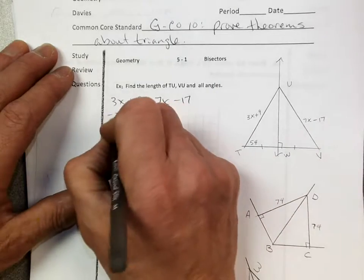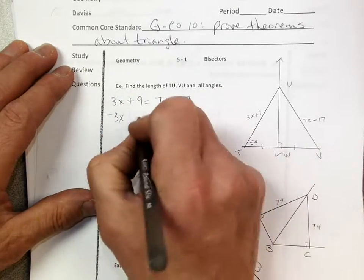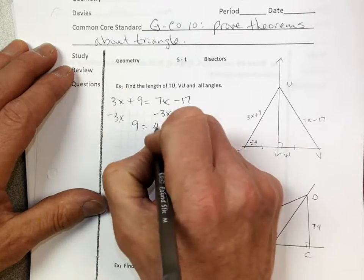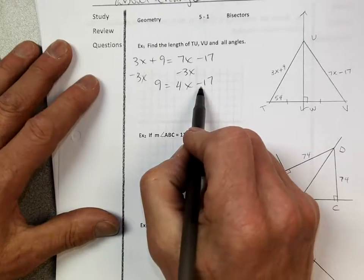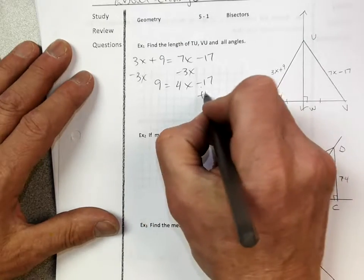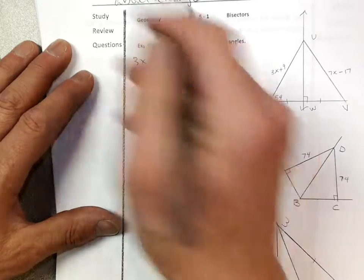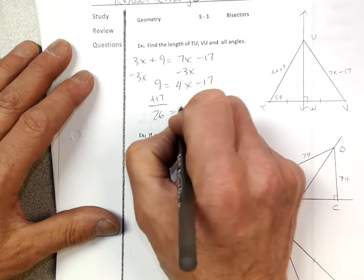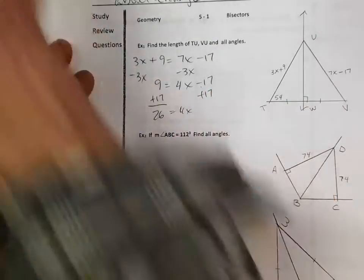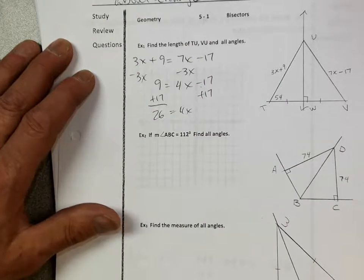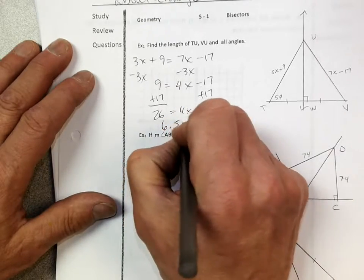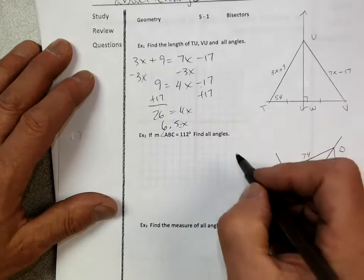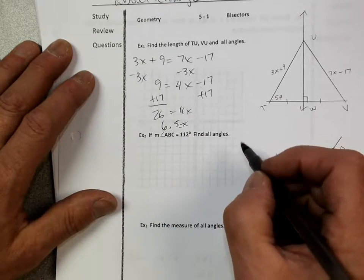So let's solve. Minus 3X minus 3X. We'll have a 9 equals 4X minus 17 plus 17 plus 17, right? What's that, a 26 equals 4X divided by 4, what's that, a 6 and a half, just real quick. 26 divided by 4, 6.5. So X is 6.5, all right? Big deal. That's not the answer. Let's plug it in, right?